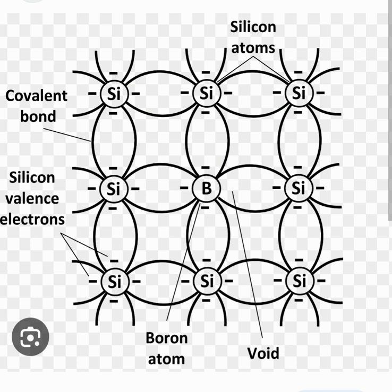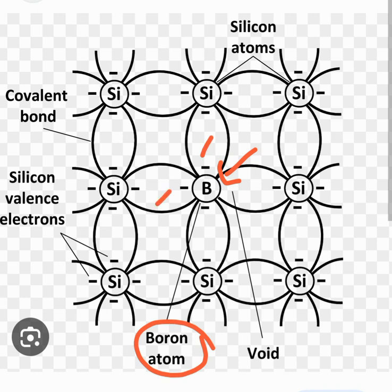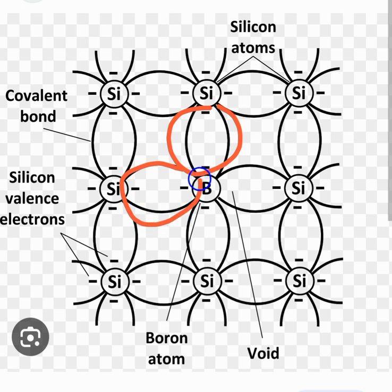That impurity also has an atomic structure. Let's say that impure material is boron. When we add a boron atom, as shown over here, boron has three valence electrons in its outer shell — unlike silicon which has four valence electrons, boron has only three. So three of them will form a covalent bond with the valence electrons of the silicon atom.